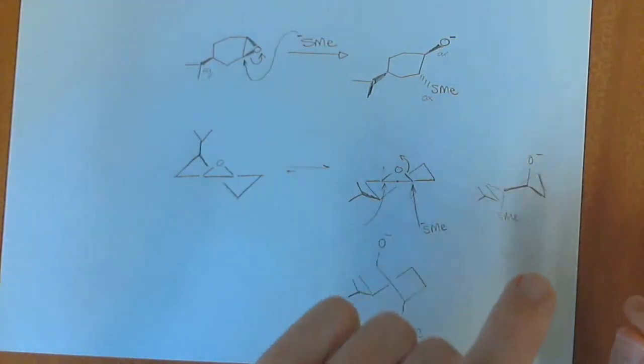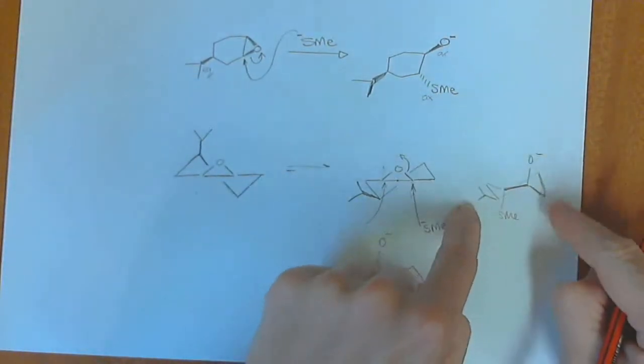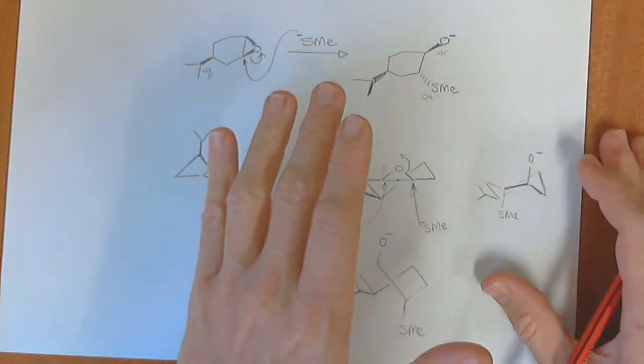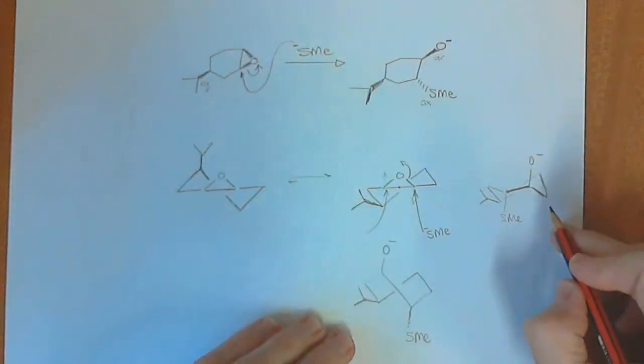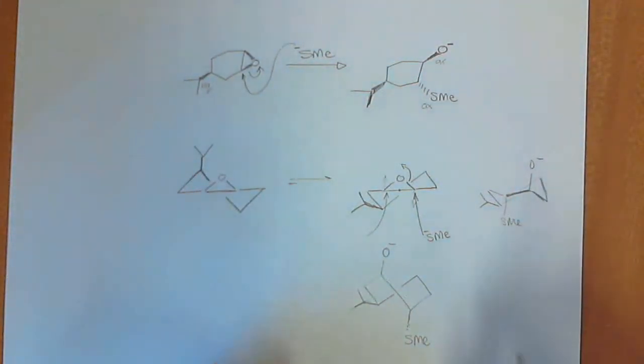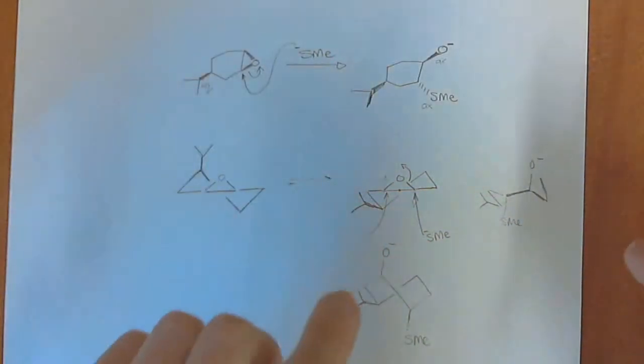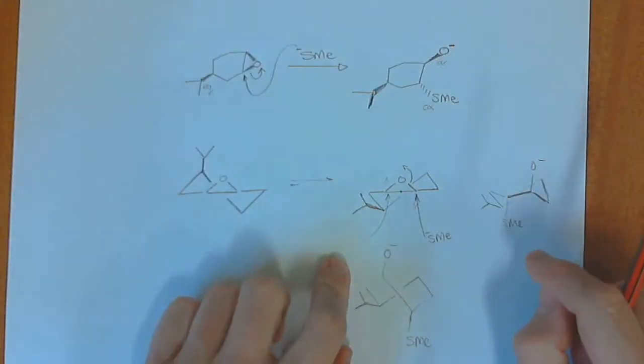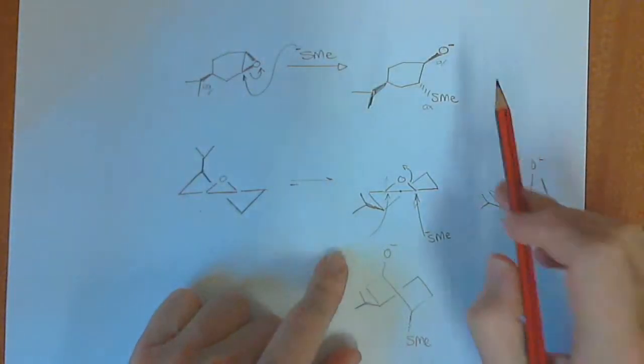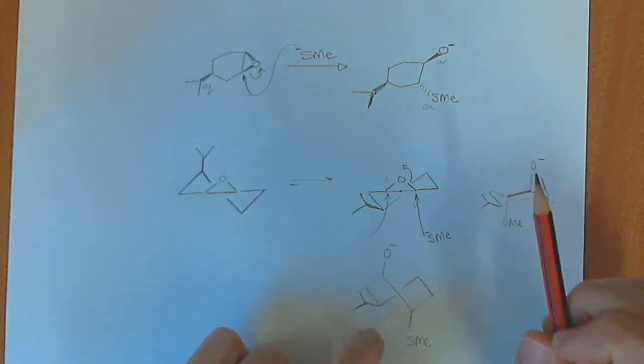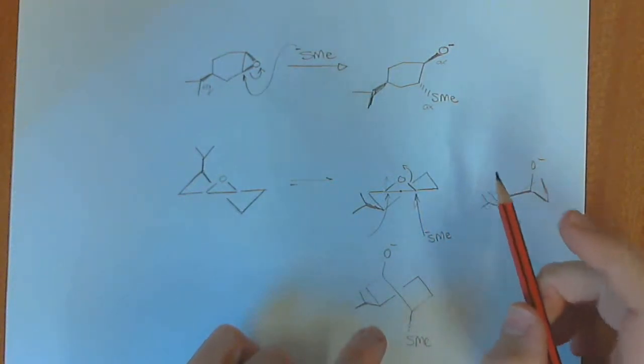This is a favored transition state. Energetically, there's less of a penalty, and so we get this intermediate being formed. It's the twist chair, and this is the real reason why for epoxides, the trans-diaxial ring opening is preferred.